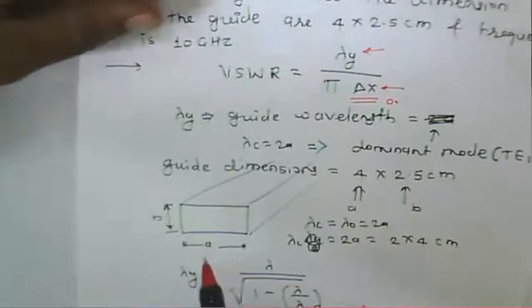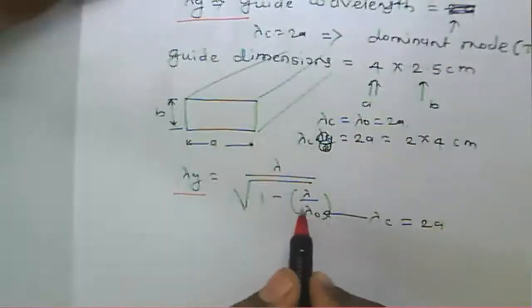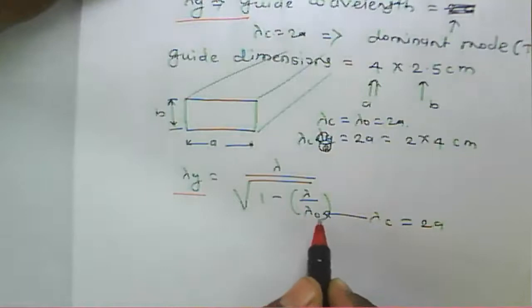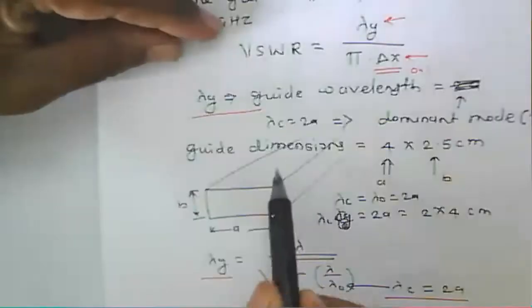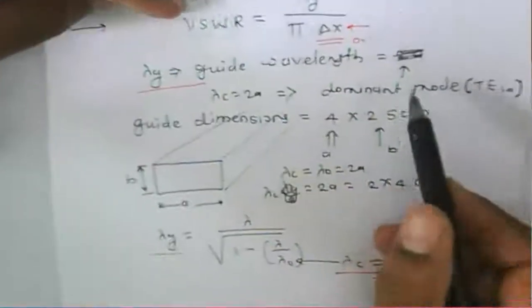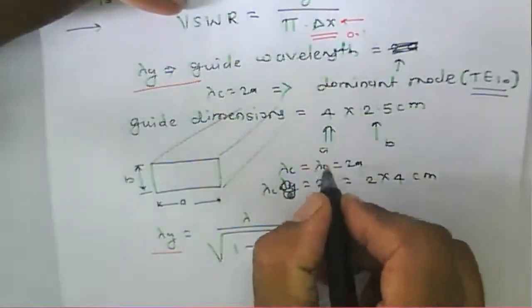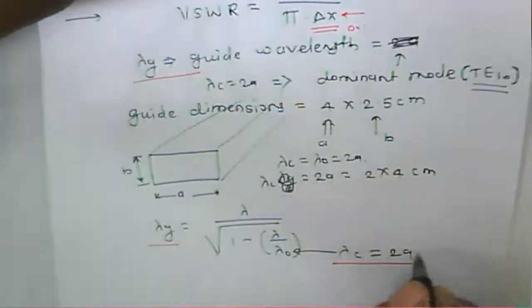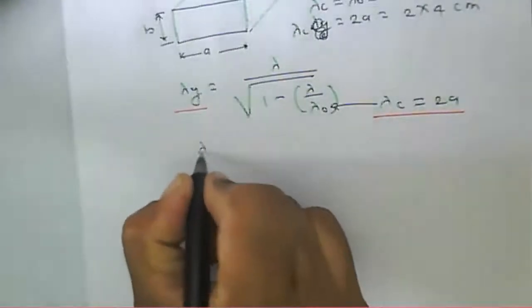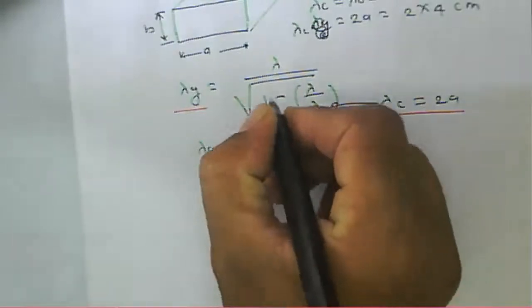Now we need to calculate the guide wavelength. Lambda g is equal to lambda divided by the square root of one minus lambda over lambda c. Here lambda c is equal to twice a, which is for the dominant mode. So lambda c equals twice a, where a is given as 4 centimeters, so lambda c will be 8 centimeters.